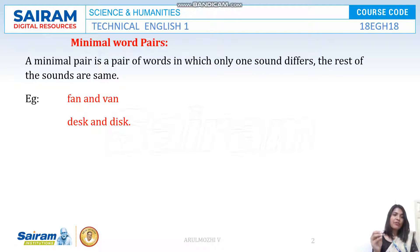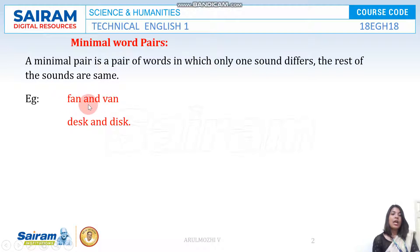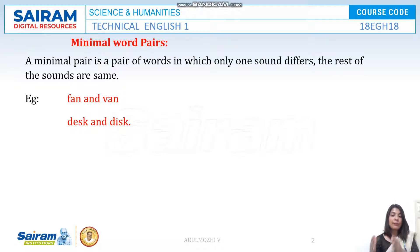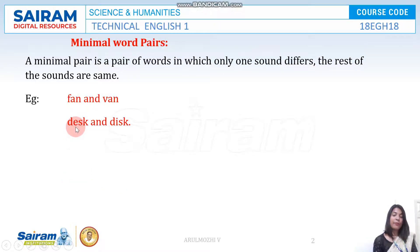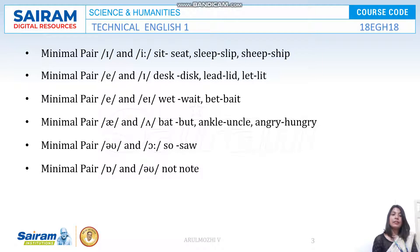The basic rule for a minimal pair is that only one sound must be differing; the others are the same. Take for example 'fan' and 'when' — here only one sound is differing. This sound differentiation can happen in the beginning, in the middle, or at the end of the word. Take for example 'desk' and 'disc' — in the first set the sound was differing in the beginning, but in the next set the sound is differing in the middle.